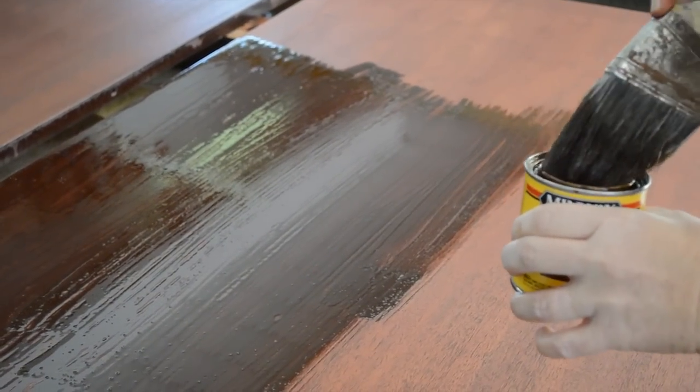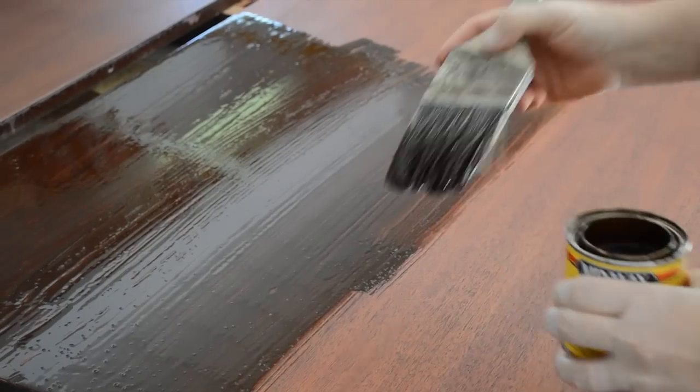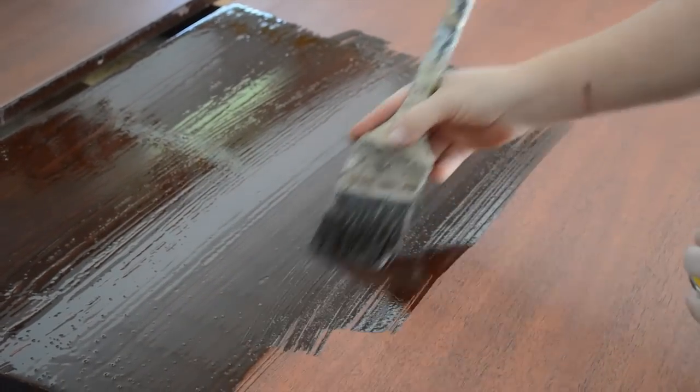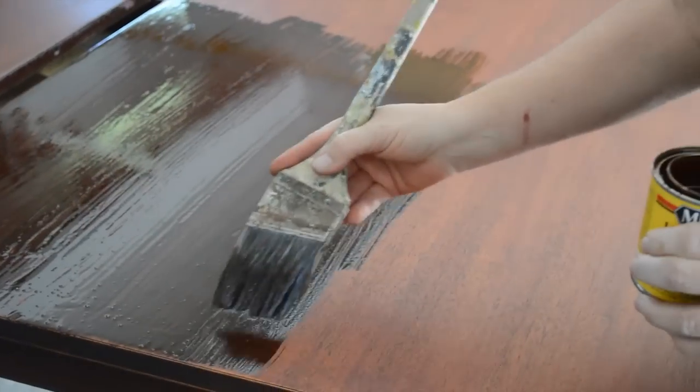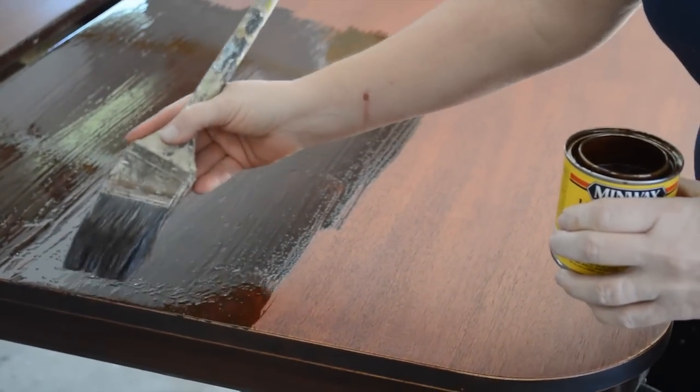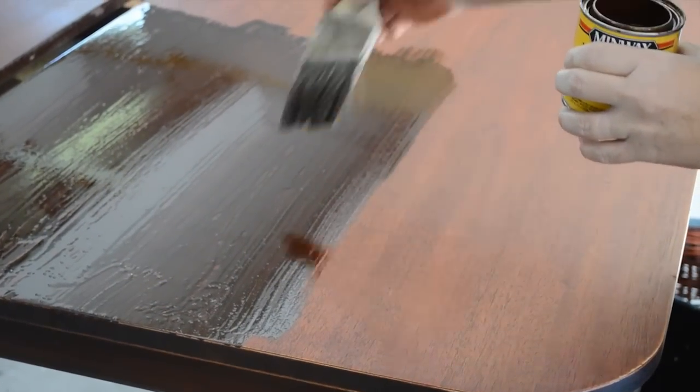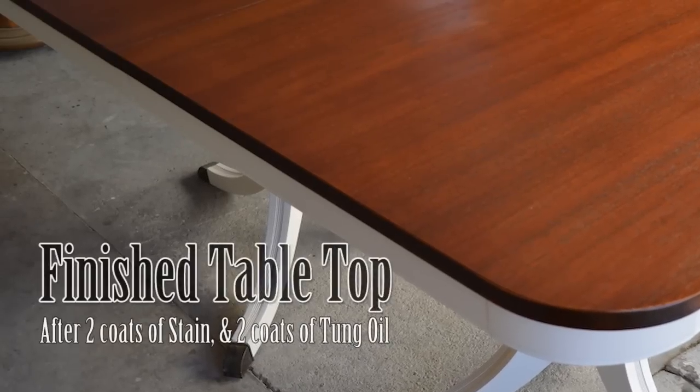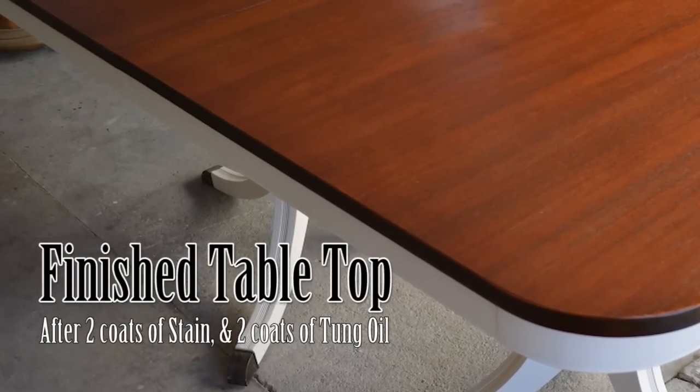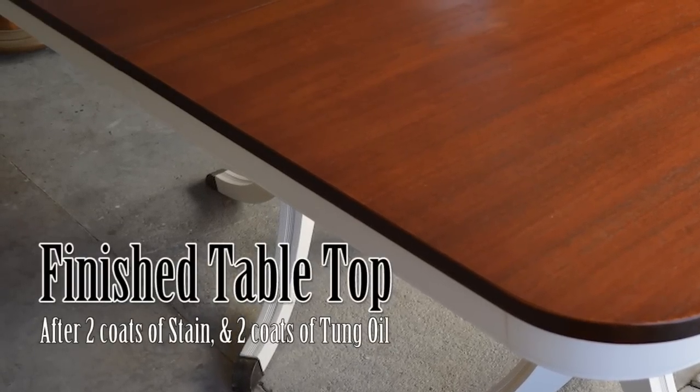The more time the stain is allowed to penetrate, the richer and darker the color will be. I let the stain sit for about 15 minutes. Then I removed any excess with a clean cloth. To get an even darker color, I applied a second coat of stain the following day.